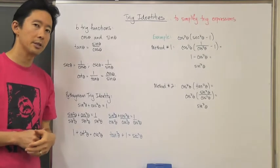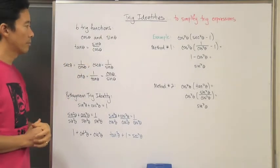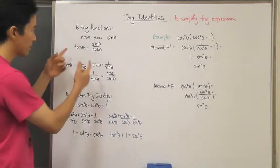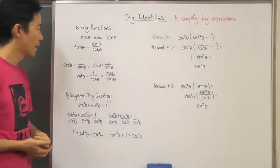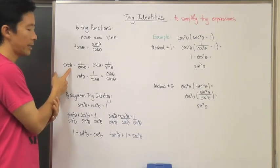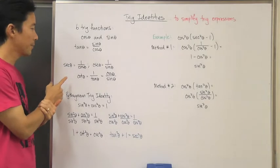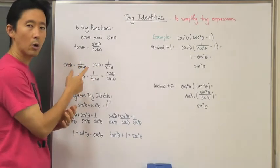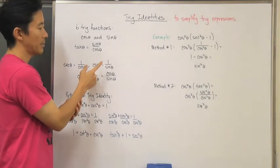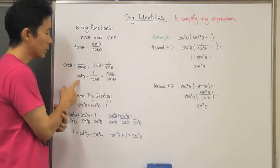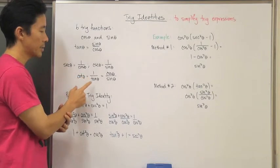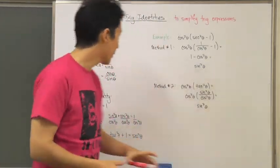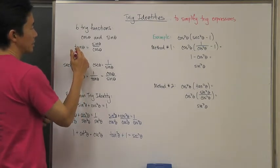There are six trig functions. We know cosine and sine, and we know that tangent is sine over cosine. The other three are the reciprocals of cosine, sine, and tangent. Secant theta is the reciprocal of cosine theta. Cosecant theta is the reciprocal of sine theta. Cotangent, or cot theta, is the reciprocal of tangent theta, which gives us cosine theta over sine theta.